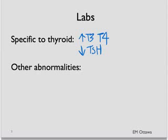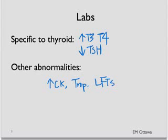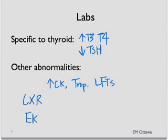Because of the effect of thyroid storm on the body, we expect the patient to have a high CK, sometimes a troponin elevation, and high LFTs. In a patient who is short of breath or in pulmonary edema, a chest X-ray is often helpful. Also, if the patient is in any tachyarrhythmia, a 12-lead ECG or rhythm strip would be very helpful in sorting this out.